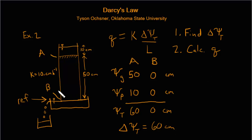Now, this column has a hydraulic conductivity of 10 centimeters per hour. So with this information, we're ready to calculate the flux: Q equals 10 centimeters per hour, and our delta psi T in this case is 60 centimeters, and the length of our soil column is 50 centimeters.